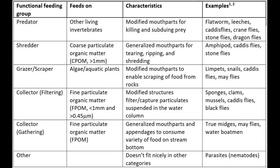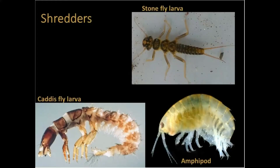As we won't be in the field to observe representative invertebrates for each group, I will show you some images. Shredders wander the stream bottom looking for vegetation that has fallen in the water, such as leaf litter or other CPOM, including wood. Using their tearing mouthparts, they rip and shred the leaves as they feed.